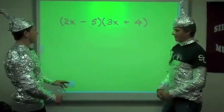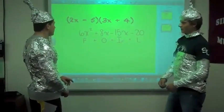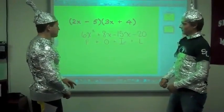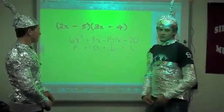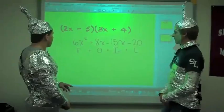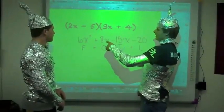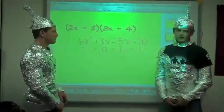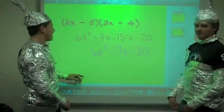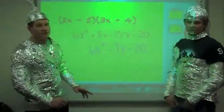We're going to use the FOIL method to multiply these two binomials together. First: 2x times 3x is 6x squared. Outside: 2x times 4 equals 8x. Inside: negative 5 times 3x equals negative 15x. Last: negative 5 times 4 equals negative 20. Now we can combine outside and inside to make negative 7x. And that's the FOIL method.